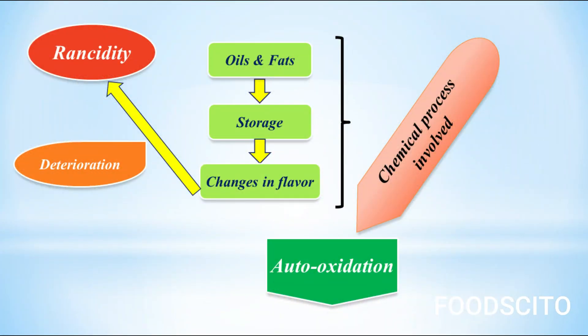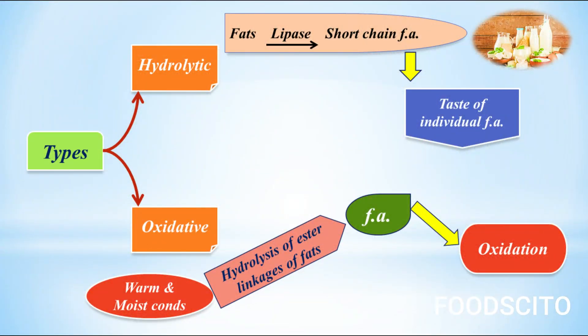Now the question arises: what is the chemical process involved in rancidity? The chemical process involved, as mentioned here, is auto-oxidation. What does the name suggest? 'Auto' means self — that fats are undergoing oxidative changes by themselves. It is called so because the rate of oxidation increases as the reaction proceeds. Now there are two types of rancidity: hydrolytic and oxidative.